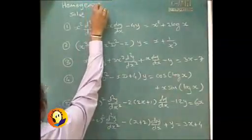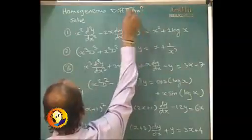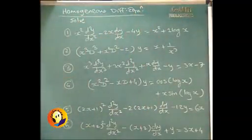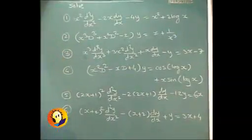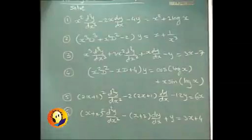So, these are homogeneous differential equations. Can be very easily identified. Our aim here will be to convert the given homogeneous differential equation to the standard linear differential equation having constant coefficients. We want to get rid of this particular multiplier and for that we are required to make some substitutions. Let us see how to solve the first problem.